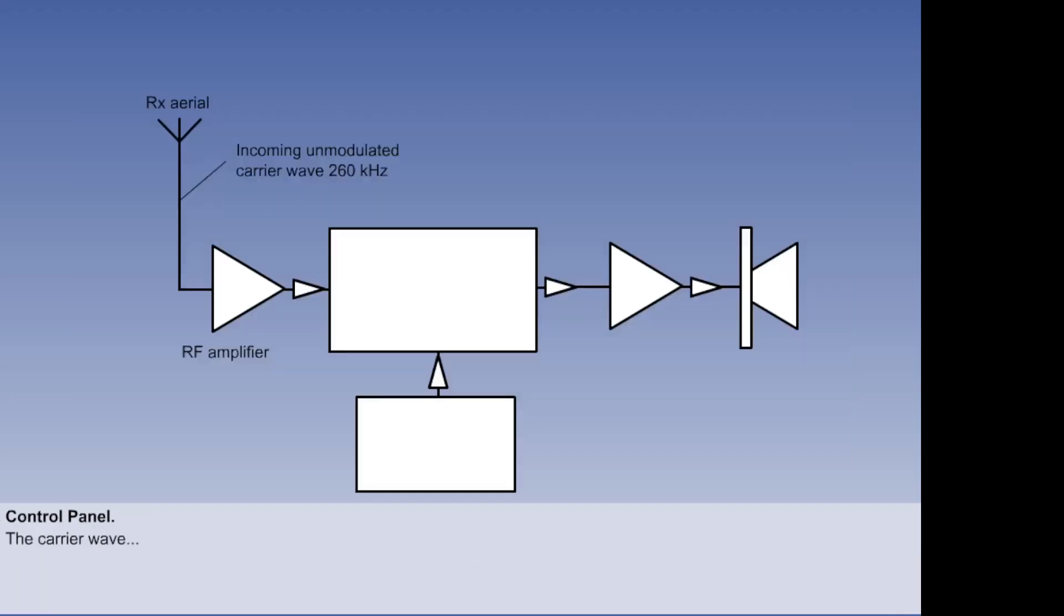Let us say that the carrier wave is transmitted at 260 kHz. The BFO generates an alternating current which differs from the incoming carrier wave frequency by 2 kHz, at 262 kHz. Both signals are fed into a frequency mixing unit, a heterodyne unit.